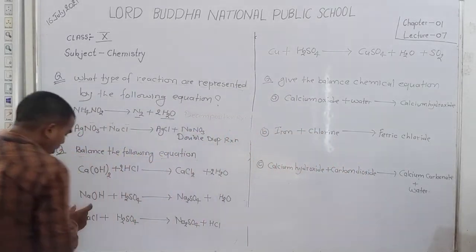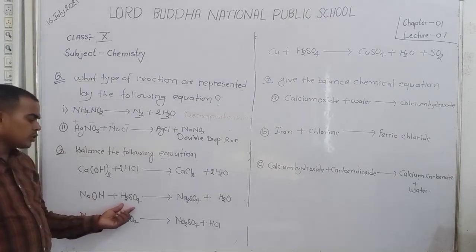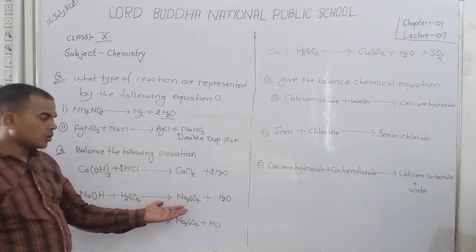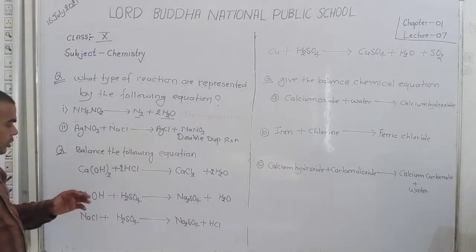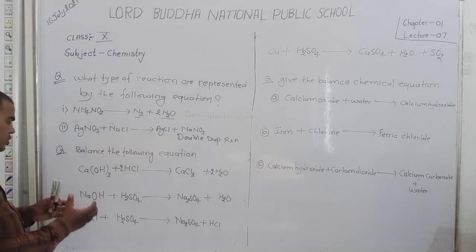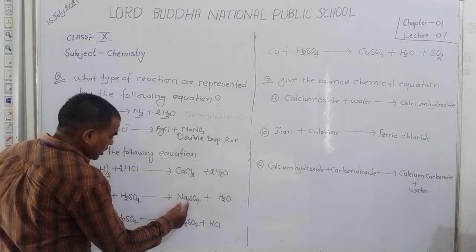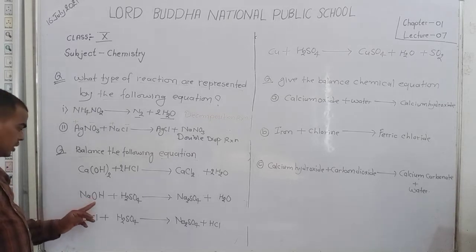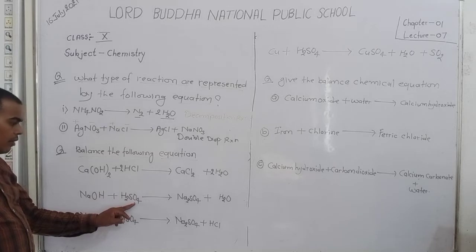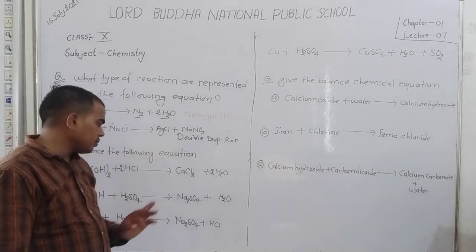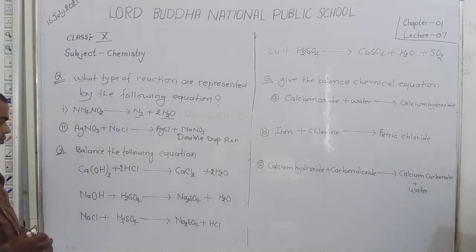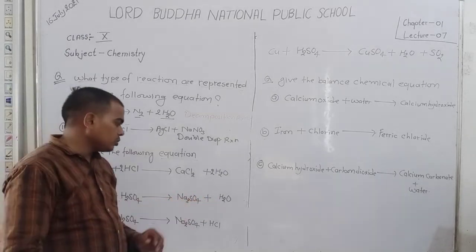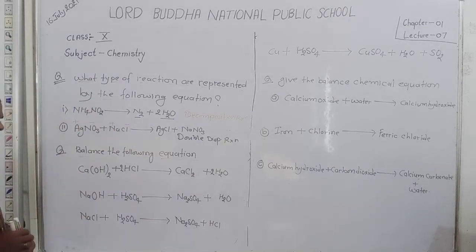Now discuss another equation. Here, NaOH — sodium hydroxide — and H2SO4 — sulfuric acid — react with each other and form sodium sulfate and water. After observation, number of sodium: 2 on the left but 1 on the right. Number of oxygen: 1 + 4 + 1 = 5 on the left, and 4 + 1 = 5 on the right — oxygen atoms are balanced. But number of hydrogen: 1 + 2 = 3 on the left but only 2 on the right — hydrogen and sodium are not balanced.